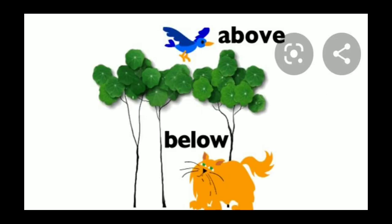What can you see in this picture? In this picture, there is 1 bird, 1 cat, and trees. Now tell me, where is the bird? The bird is above the trees. And where is the cat? The cat is below the trees.